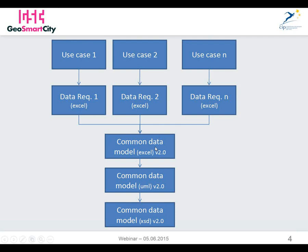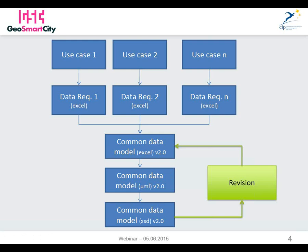We used Excel because it was a formalism suitable to collect and share views and collect interactions from all partners, not necessarily experienced with UML. Once we agreed on the stable version of the common data model, we followed further steps related to the generation of the UML data model and then the generation of the XSD application schema — the GML application schema, the XSD file — to be used in any transformation software tool used by pilots. Of course, there is a continuous revision loop because once the common data model has been agreed, when entering into the more detailed phase of physical transformation, some further retune may be needed, particularly when dealing with different partners using the same model with different data requirements merged into one common data model.